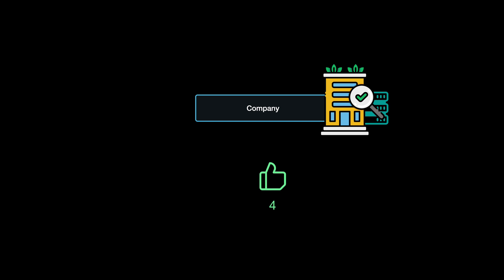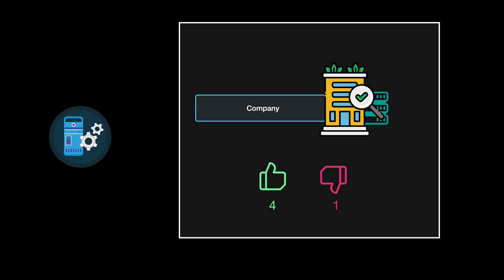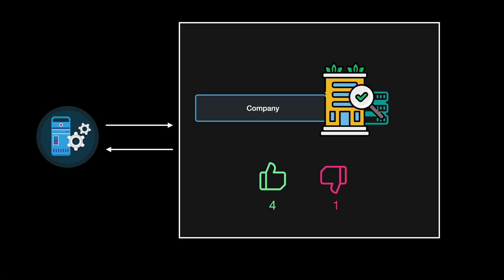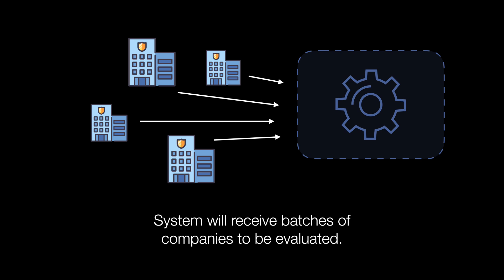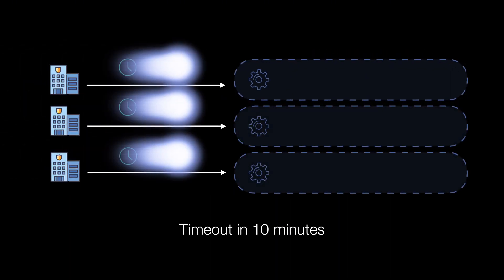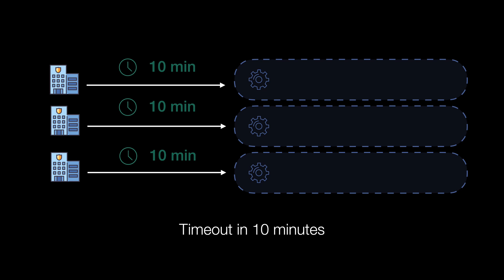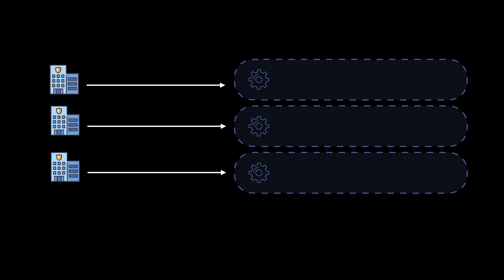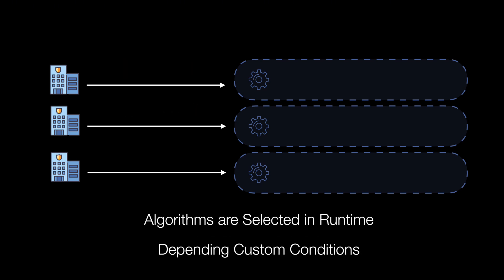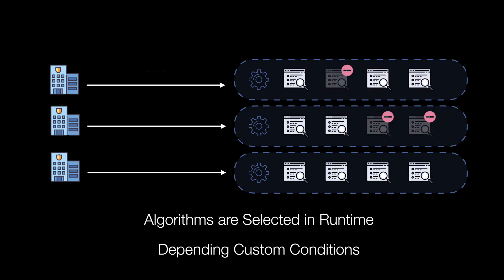At the end of a company's Trust Evaluation, the company will have its own Trust Score containing positive and negative points. This information can be used by other parts of our system. The system should be capable of processing multiple evaluations concurrently. A single score evaluation should take no more than 10 minutes to finish. Also, the algorithms used to evaluate a specific company are chosen at runtime, according to customizable conditions,